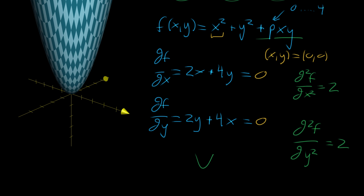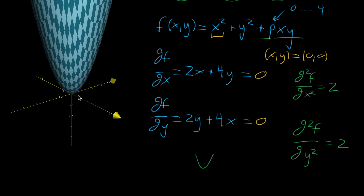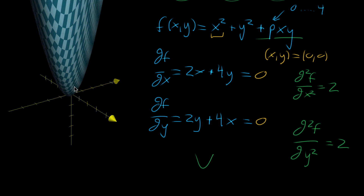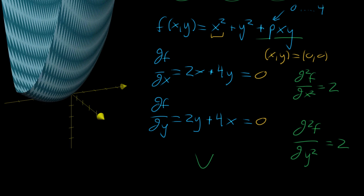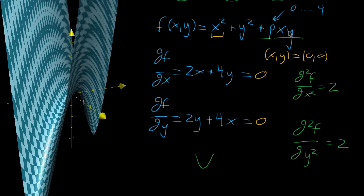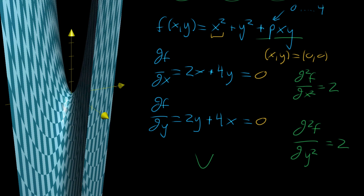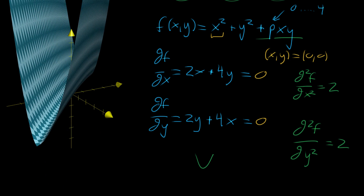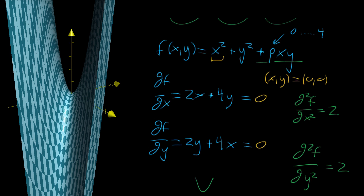Even as p increases — say around 1.5 — you still get a local minimum with positive concavity in all directions. But there's a critical point where, as p increases further, it passes over and turns into a saddle point. This is entirely due to the coefficient in front of the xy term — nothing to do with x squared or y squared. It'll become clear that this critical crossover happens when p equals two, passing from local minimum to saddle point.